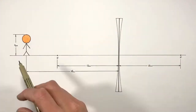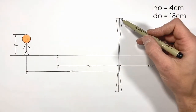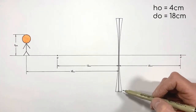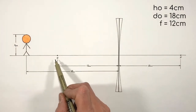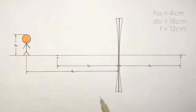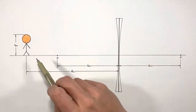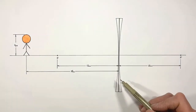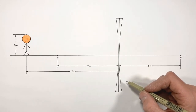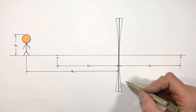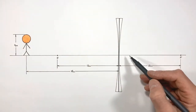In this problem we have a four centimeter tall object which has been placed 18 centimeters in front of a concave lens that has a focal length of 12 centimeters. Both focal points are drawn 12 centimeters away from the lens. First we're going to draw a ray tracing diagram to determine where the image appears, then we'll use the thin lens equation to calculate the image position, magnification, and height of the image.